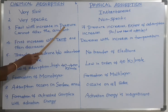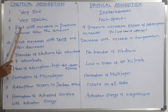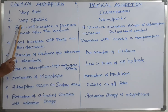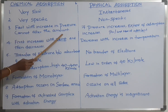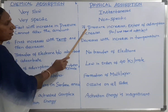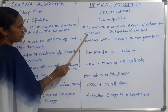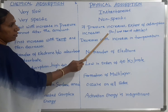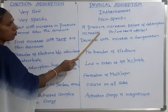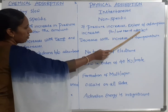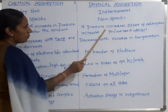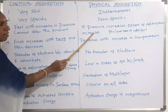Third difference: for chemical adsorption, an increase in pressure does not significantly alter the amount of adsorbate molecules on the surface. But for physical adsorption, if pressure increases, the extent of adsorption increases. The extent of adsorption means the amount of adsorbate molecules absorbed per unit mass of the adsorbent.